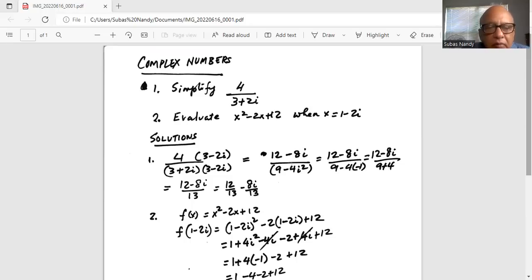So we'll do the first problem 4 divided by 3 plus 2i. We will multiply by the conjugate, which is 3 minus 2i in the numerator and 3 minus 2i in the denominator.